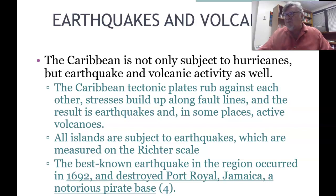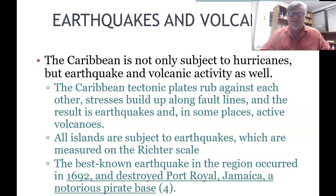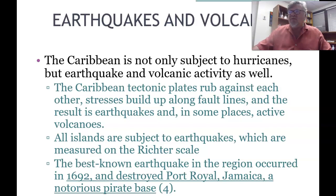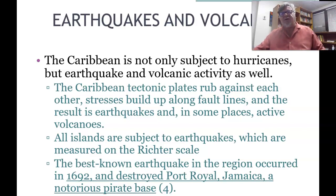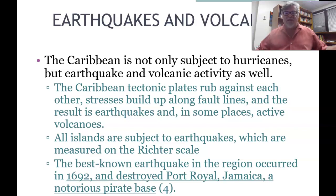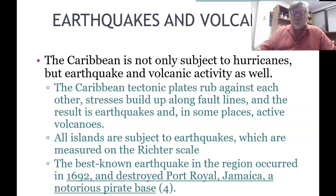The best-known earthquake in the region occurred in 1692 and destroyed Port Royal, Jamaica — a notorious pirate base and the home capital of Henry Morgan. He had been knighted and made governor, rising from being a Welsh indentured servant. In 1692 an earthquake struck and a tsunami completely swallowed up Port Royal, which some consider a judgment on the dissolute lifestyle of the buccaneers.